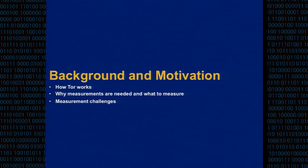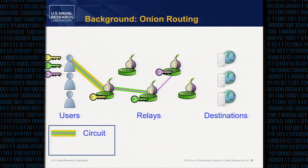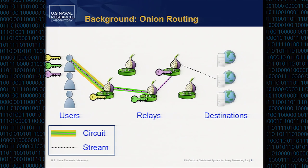I'm going to start with a bit of background about how Tor works — just enough to understand what we're measuring, why measurements are needed, and some challenges involved. Tor is based on the onion routing protocol. Clients first build what's called a circuit through the network: they choose three Tor relays and telescope a connection through them. At the end of this process, the client has a symmetric key with each relay, which they can use to encrypt packets. Once the circuit is built, they can instruct the last relay to connect to an internet destination. This end-to-end connection is called a stream.